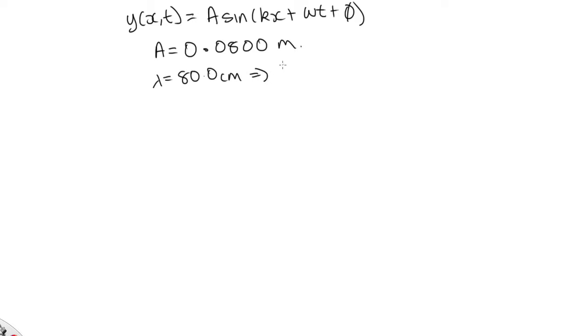And so that tells us k is equal to 2 pi over lambda, which is 2 pi over 0.80. So this is equal to 2.50 pi.